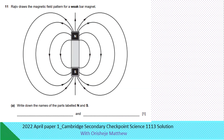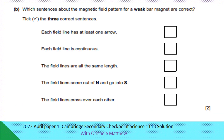Question 11. Some magnetism. Raji draws the magnetic field pattern for a weak bar magnet. Write down the name of the parts N and S — North Pole and South Pole. Which sentences about the magnetic field pattern for a weak bar magnet are correct? Each field line has at least one arrow. Each field line is continuous. The field lines are all the same length — no. The field lines come out from the north and go into the south.